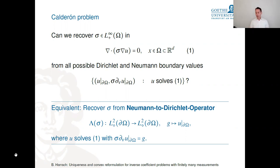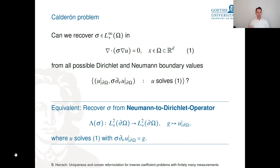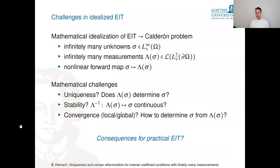The Neumann-to-Dirichlet operator Λ(σ) is a linear, well-posed operator mapping L² functions on the boundary to L² functions (up to constants). However, it depends nonlinearly on the PDE coefficient σ. What we measure for a given σ is this whole operator, and we must somehow invert this nonlinear mapping from the conductivity coefficient to the Neumann-to-Dirichlet operator.